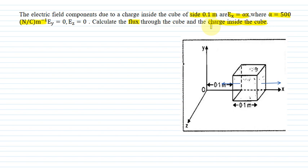That means we have two parameters. The first one is flux and the second is charge inside the cube. The electric field component in x direction is alpha x. Ey equal to Ez value is 0. That means y and z direction is not required.